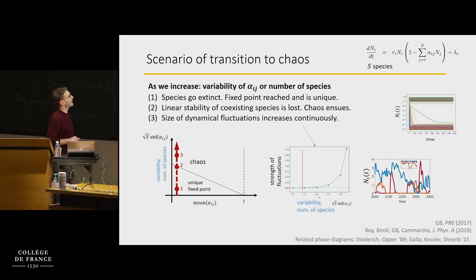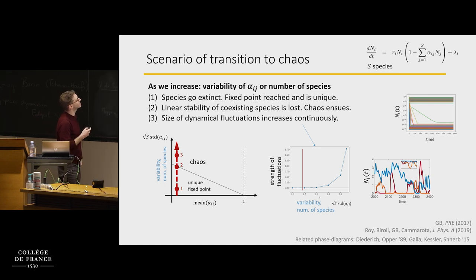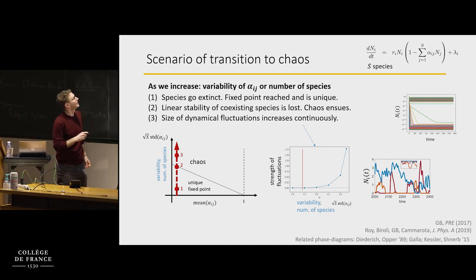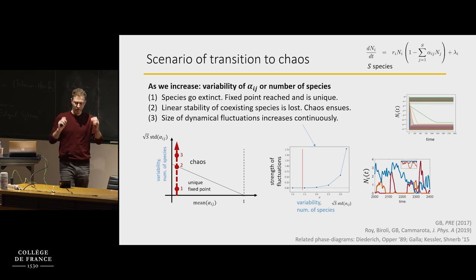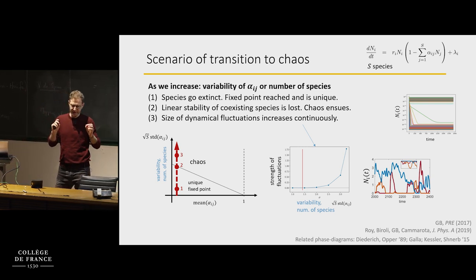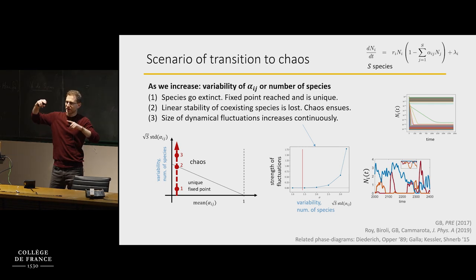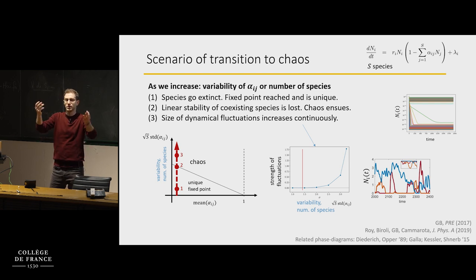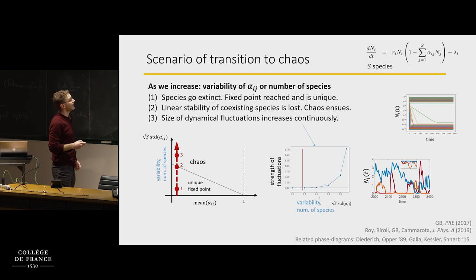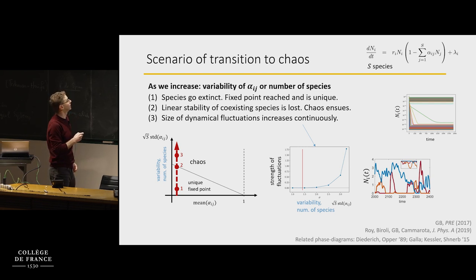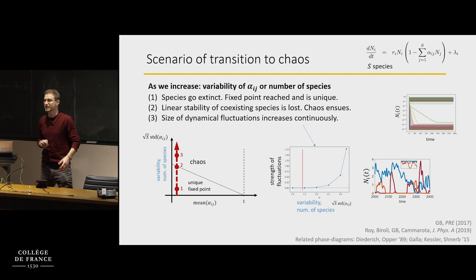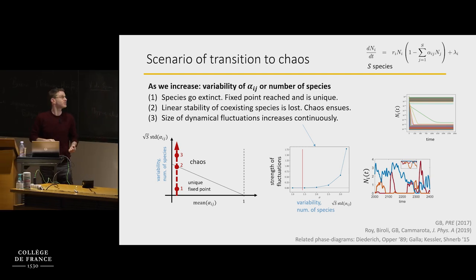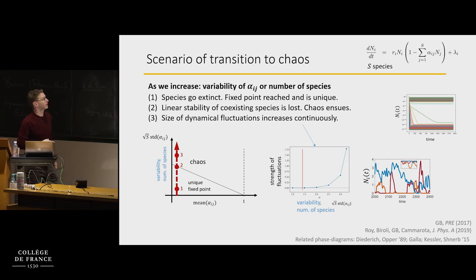In fact, these fluctuations can be shown to be chaotic. As you continue to increase past this phase transition, the size of the dynamical fluctuations — if you take the time variability of each species, how much it fluctuates in time, let's say the variance in time, averaged over all species — that quantity increases continuously as you go further into the chaotic phase. In that sense it's what we would call a continuous phase transition in those parameters.